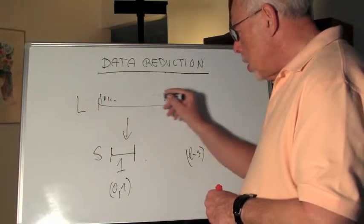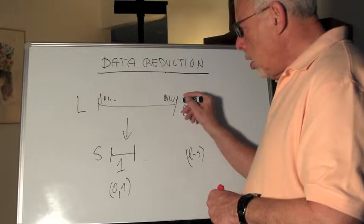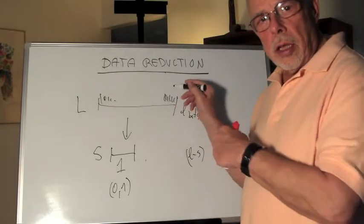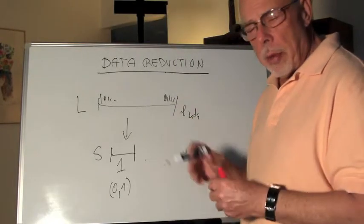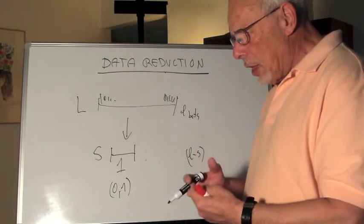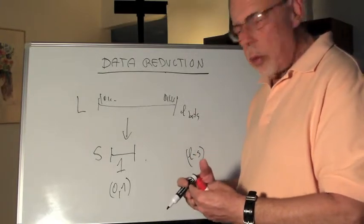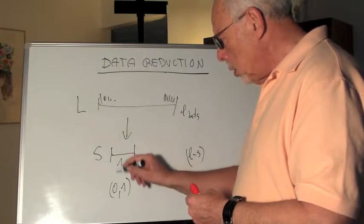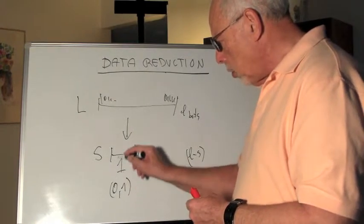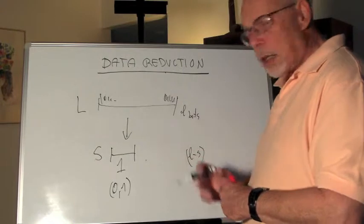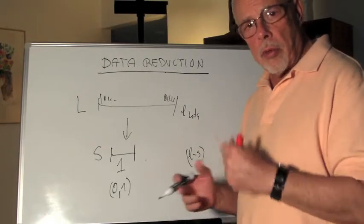How do we do it? Suppose we simply add the values of all the bits in the long string, add them up, and if the result is an even number we will write zero here in the short string. If the result is an odd number we will write one.